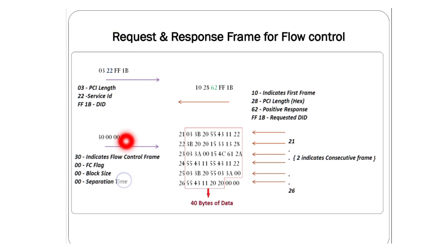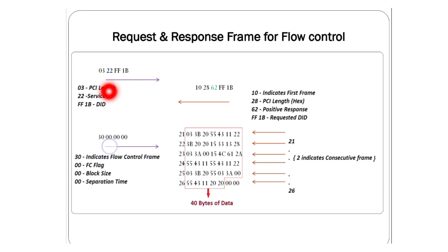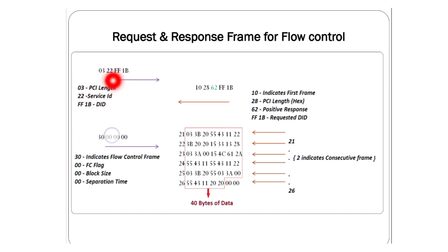This is the tester side and this is the ECU side. You can send 10-01 for default session and get response 50-01, but this is not mandatory since we're already in default session by default. Moving on: 22 is the service called Read Data By Identifier. In this request, FF and 1B is the data identifier. The PCI length is 03, because three bytes of data are used — 22, FF, and 1B.